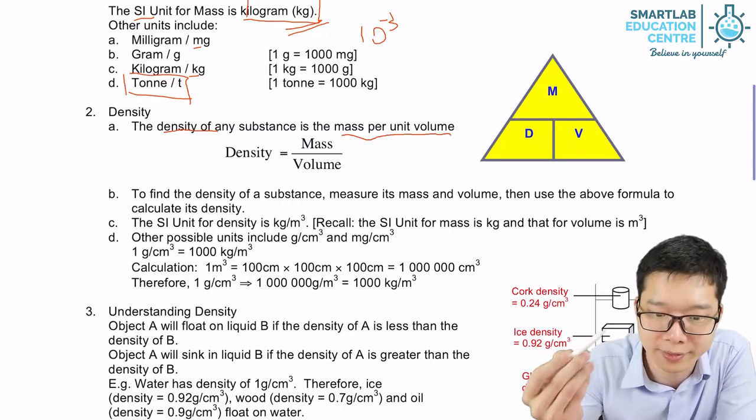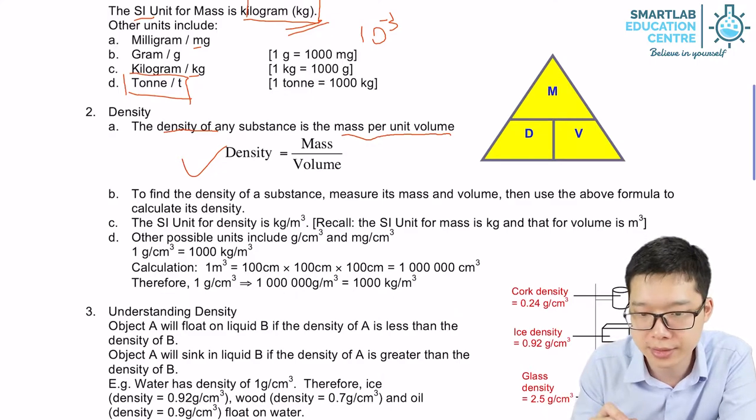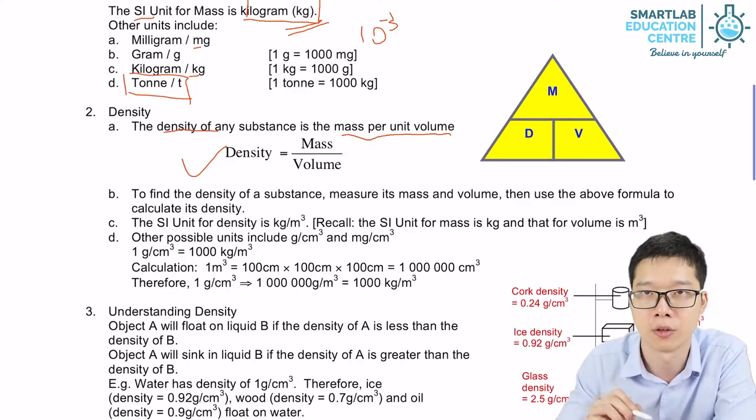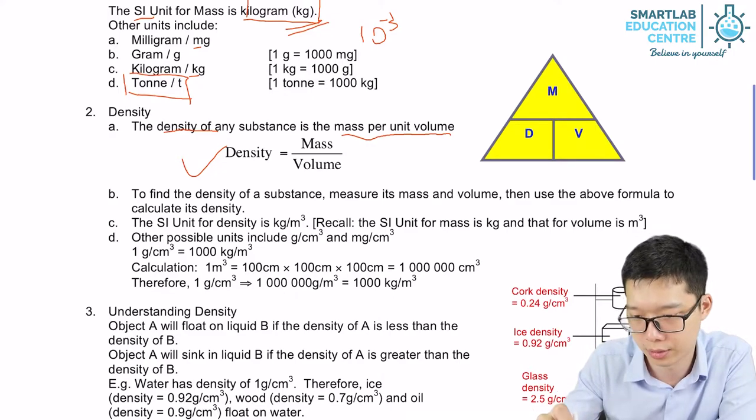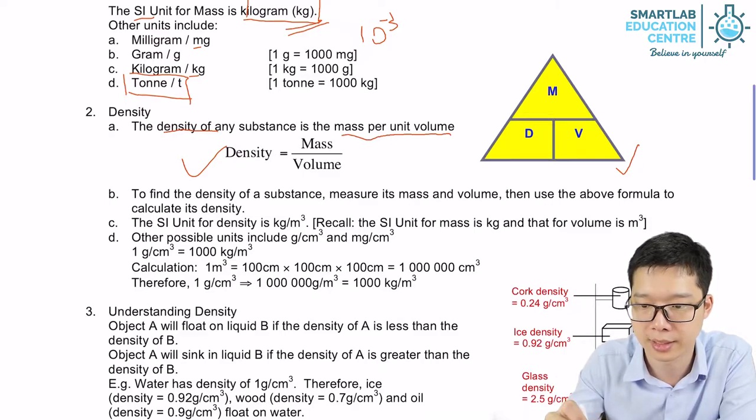So by the definition of density, we can have the formula over here. Density equals to mass over volume. So for your benefit of memorizing, there's a triangle over here. Density times volume equals to mass.